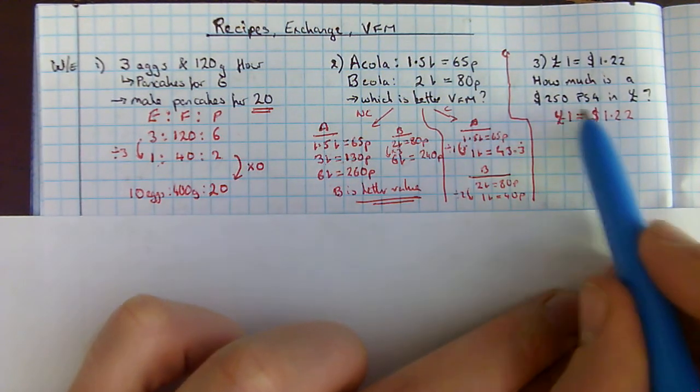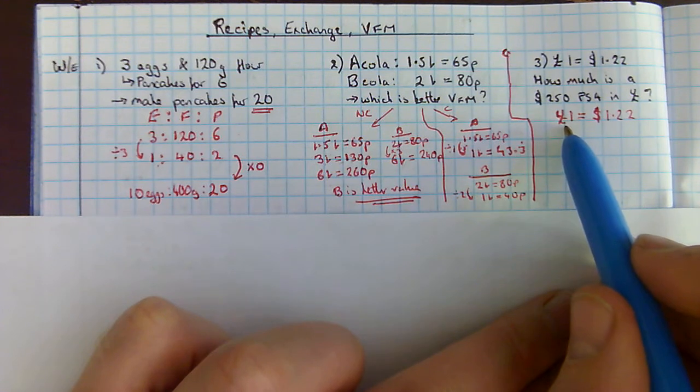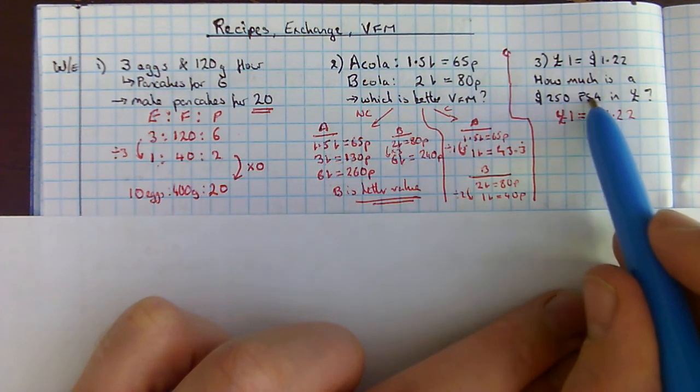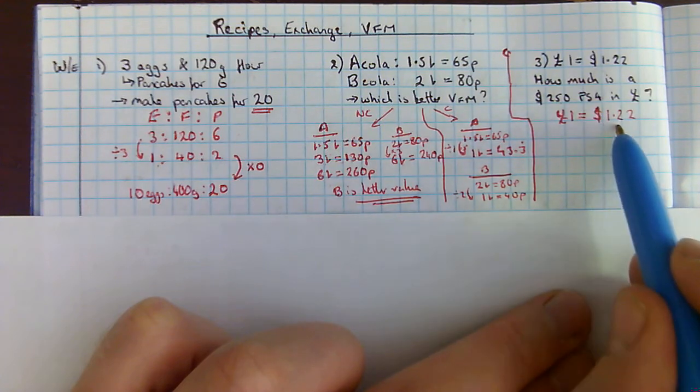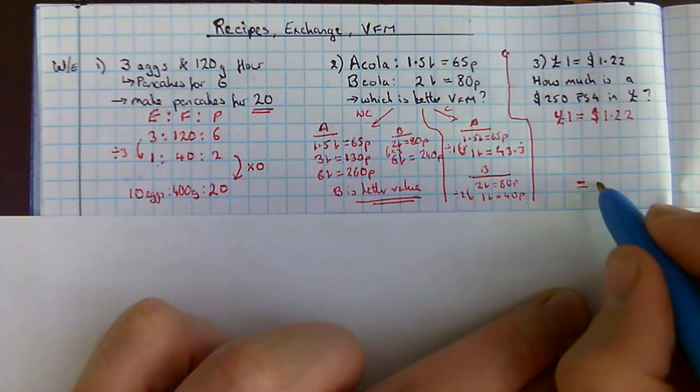I've got £1 is equal to $1.22. I've got a $250 PlayStation 4. How much is it going to cost in pounds? Well, I need to make sure my $250 is on the correct side of my ratio. The dollars is the right-hand side in how I've set this out. So, I need to go to $250.